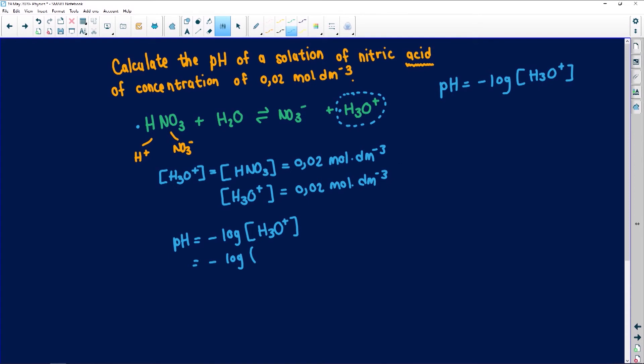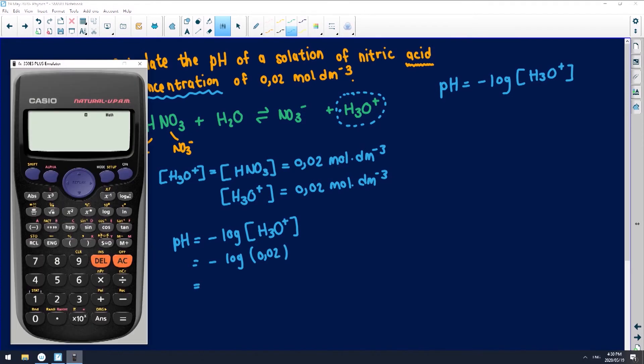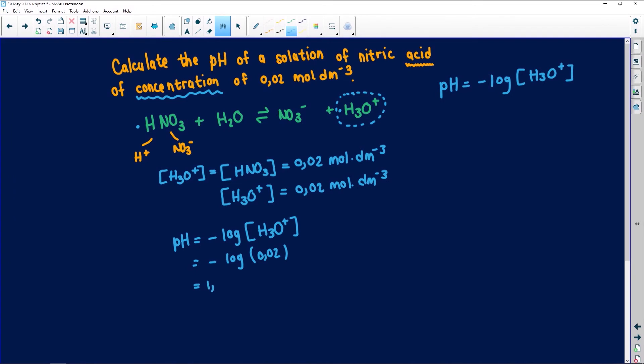I'm going to use negative log. The solid brackets show that it's the concentration of the H3O+. They told us that it has the concentration of 0.02. Let's put this on our calculator and see what we get. I'm going to say negative log 0.02, close my bracket. I've got 1.698.